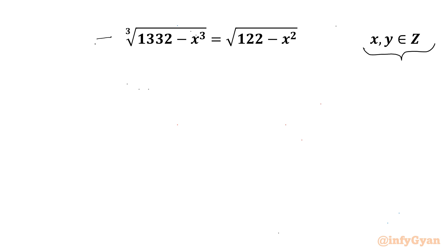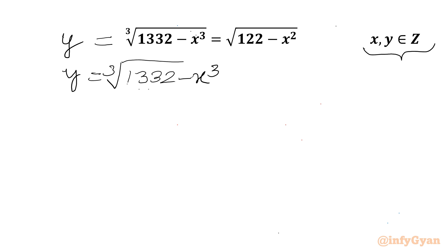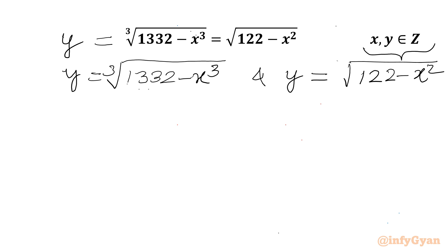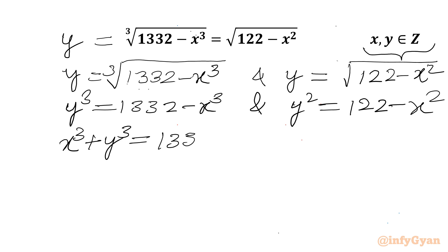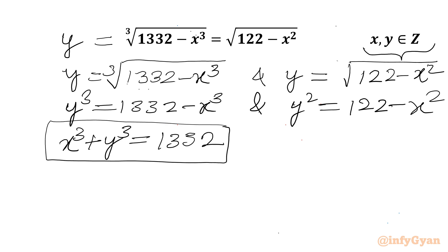Let's get started by considering this equation equal to y. So I can write y equal to cube root of (1332 minus x cubed) and y equal to square root of (122 minus x squared). Cubing the first equation gives y cubed equal to 1332 minus x cubed, and squaring the second gives y squared equal to 122 minus x squared.